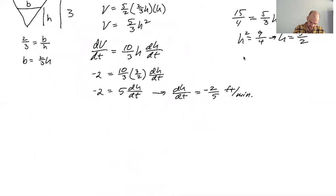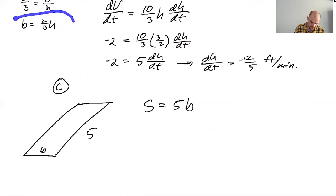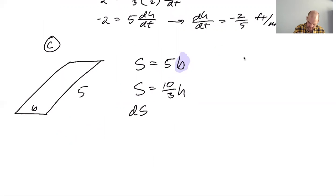Okay, so for c, I think we're dealing with like this right? So that's five, this is b, so S is five b. So then we also know that b in general is two-thirds h, so I'm gonna say that S is ten-thirds h because b is two-thirds h. So what I'm basically doing is I'm replacing b with two-thirds h. Okay, so then dS/dt is ten-thirds dh/dt.